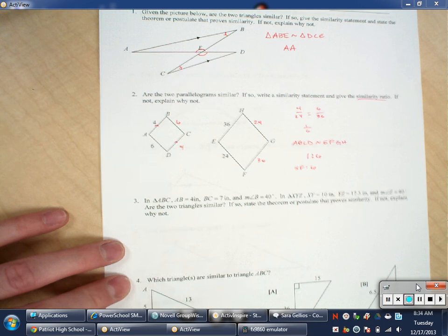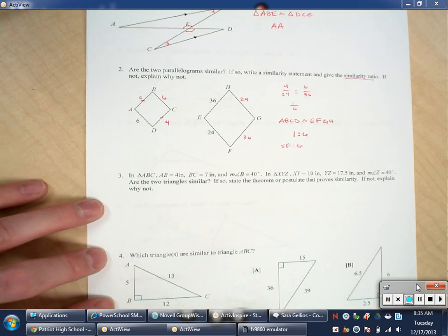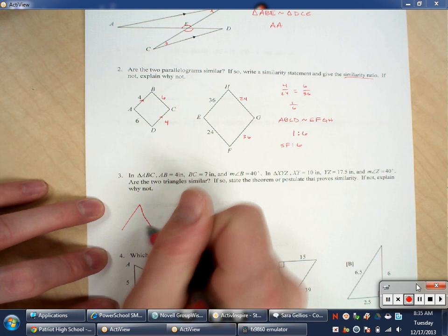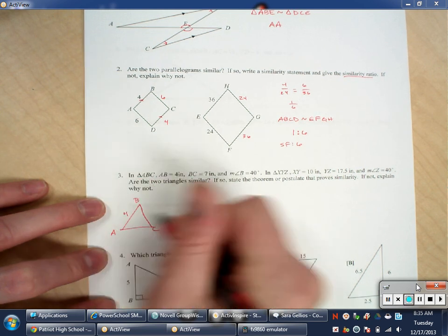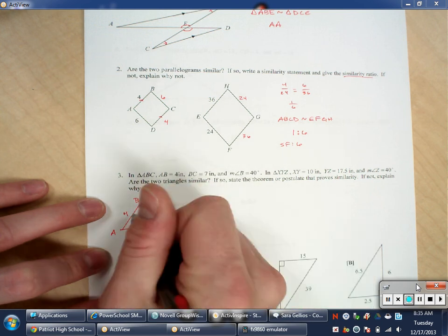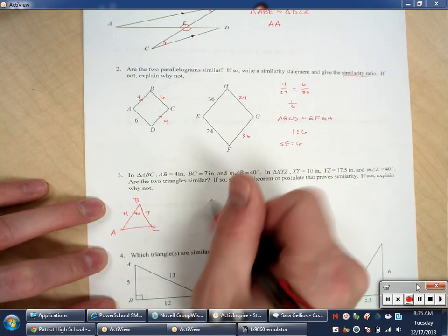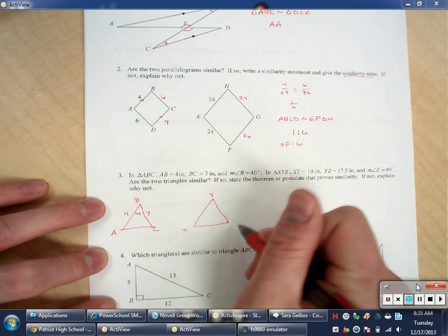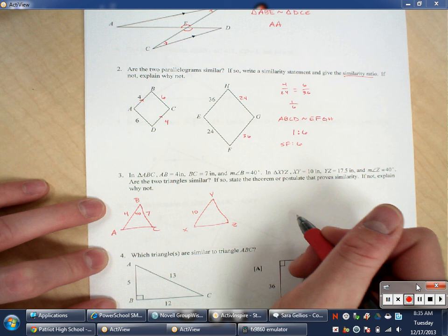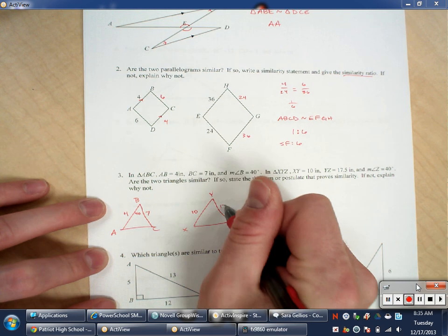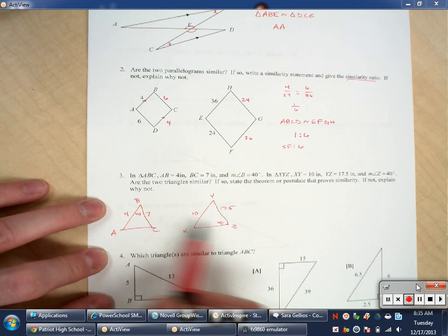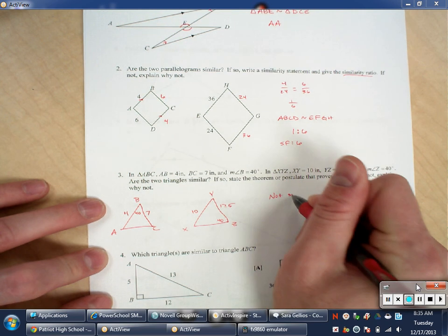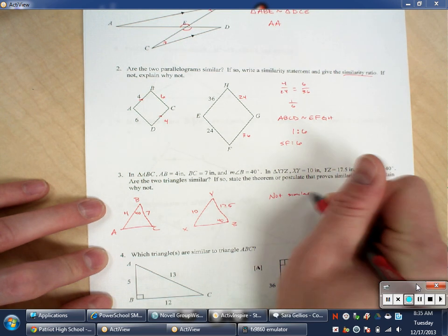The second one gives me a bunch of words but no drawing. So I'm going to create the drawing myself. So I have triangle ABC, where AB is 4 inches, BC is 7 inches, and the measure of angle B is 40. And I have triangle XYZ, where XY is 10, YZ is 17.5, and Z is 40. These two triangles are not similar because the corresponding angles aren't in between the corresponding sides. So this is not similar. And it says, if not, explain why not.